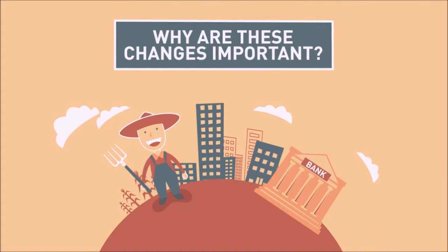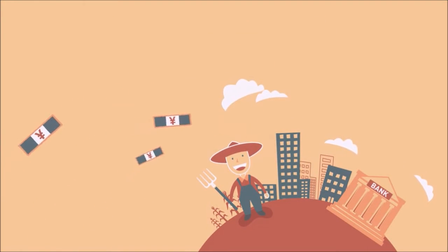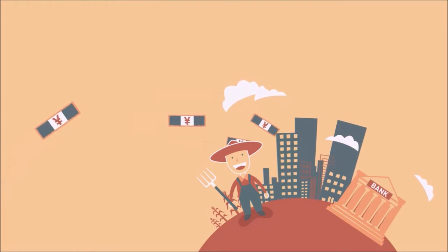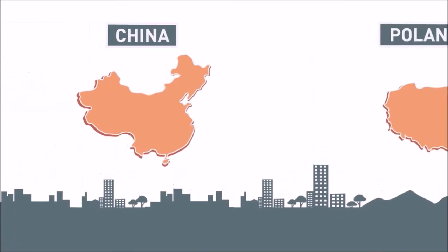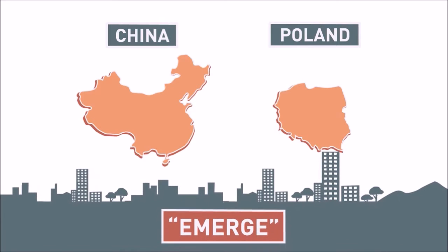One reason these changes are important is that these nations want to build confidence in their economies and among their people. Stable economies encourage foreign investment and keep local investors from sending capital abroad, spurring further growth. So while China and Poland seem completely different from each other in terms of population and GDP, they are both in some process of getting their economies to emerge on the global scene.